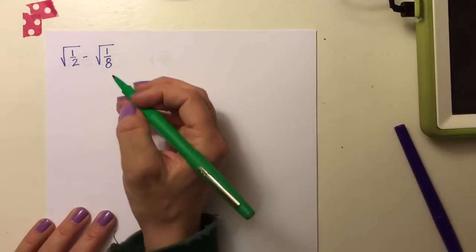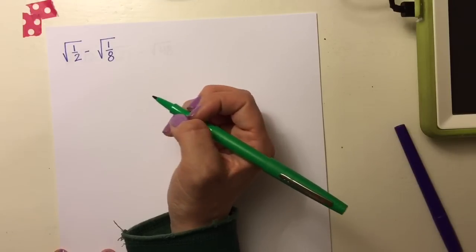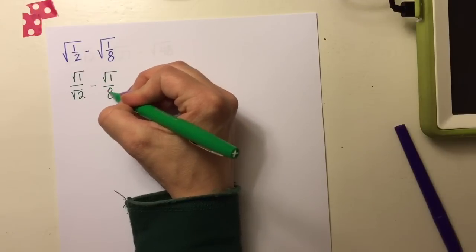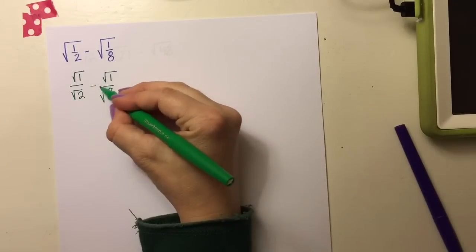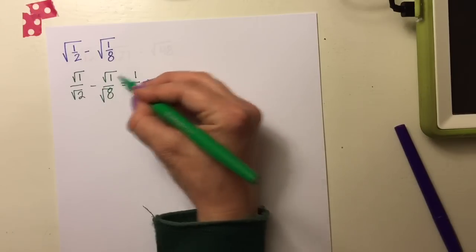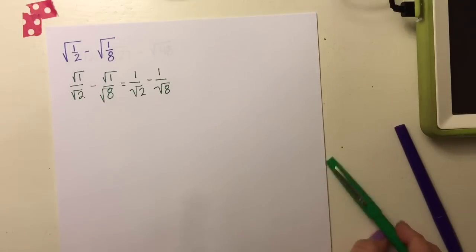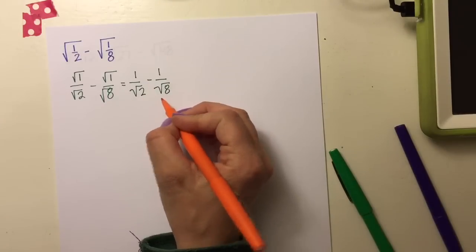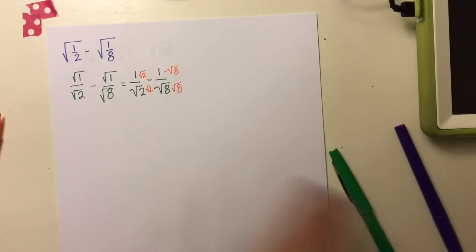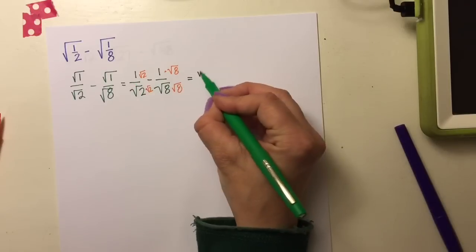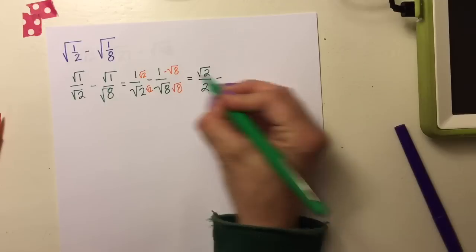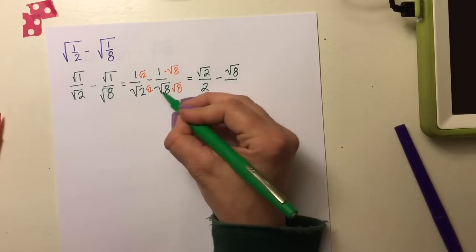For fractions with radicals, we go back to rationalizing the denominator. The easiest way is to separate into numerator and denominator: √1 over √2 minus √1 over √8. Since √1 = 1, we have 1/√2 minus 1/√8. You cannot have radicals in the denominator, so we rationalize. Multiplying: 1 times √2 gives √2, and √2 times √2 gives 2. For the other term: 1 times √8 gives √8, and √8 times √8 gives 8.